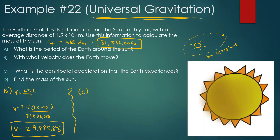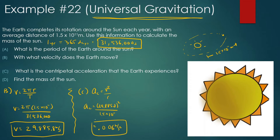Part C: What is the centripetal acceleration that the Earth experiences? The centripetal acceleration — which is the same thing as the acceleration of gravity in this case — is equal to v squared over r. So centripetal acceleration is 29,885.8 squared divided by 1.5 times 10 to the 11, giving us a very low number — about 0.006 meters per second squared. That's the acceleration the Earth feels from the Sun.